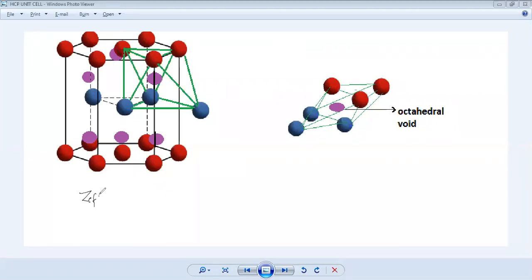Z effective of an HCP unit cell is six, and number of octahedral voids is equal to Z effective, and that is also equal to six.